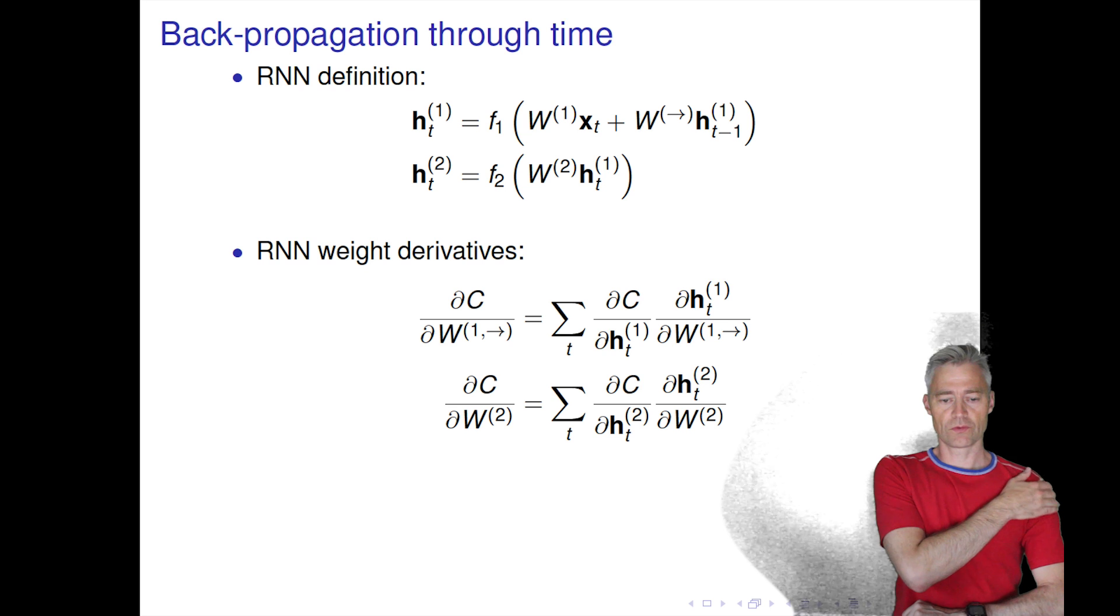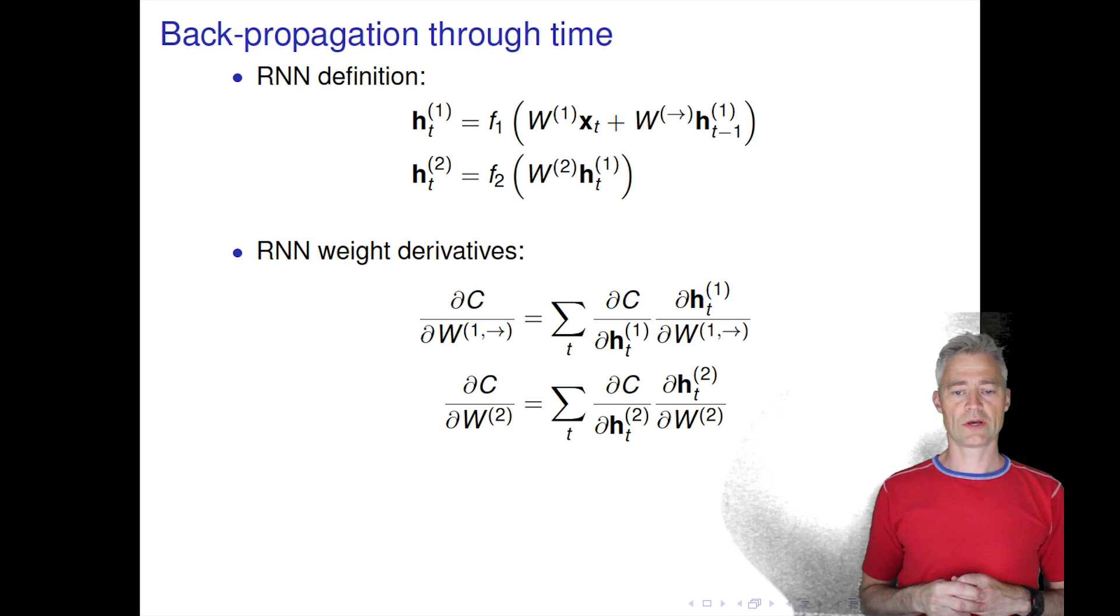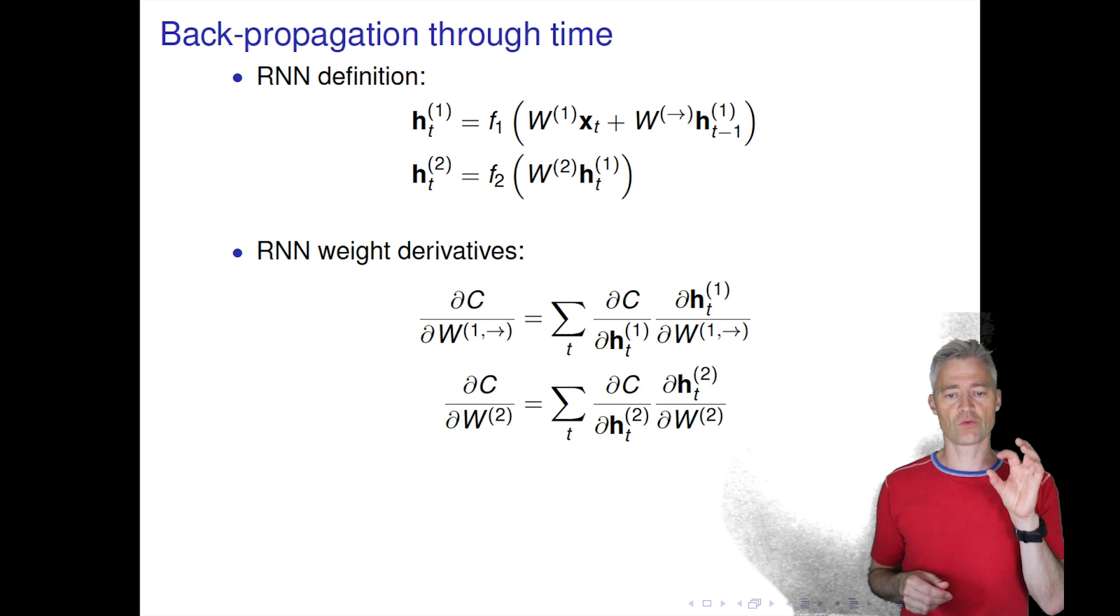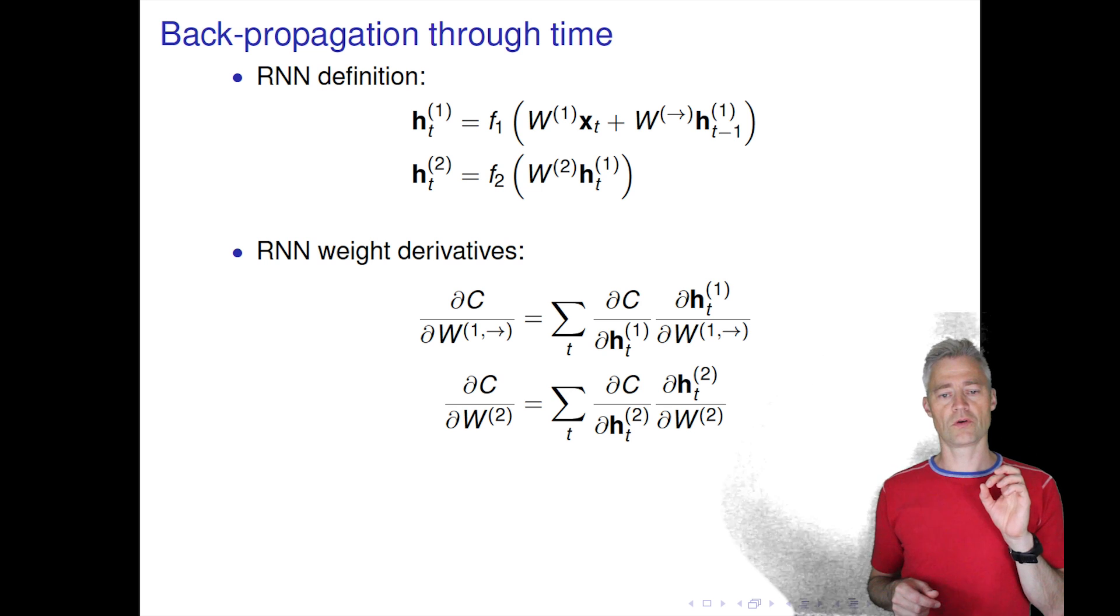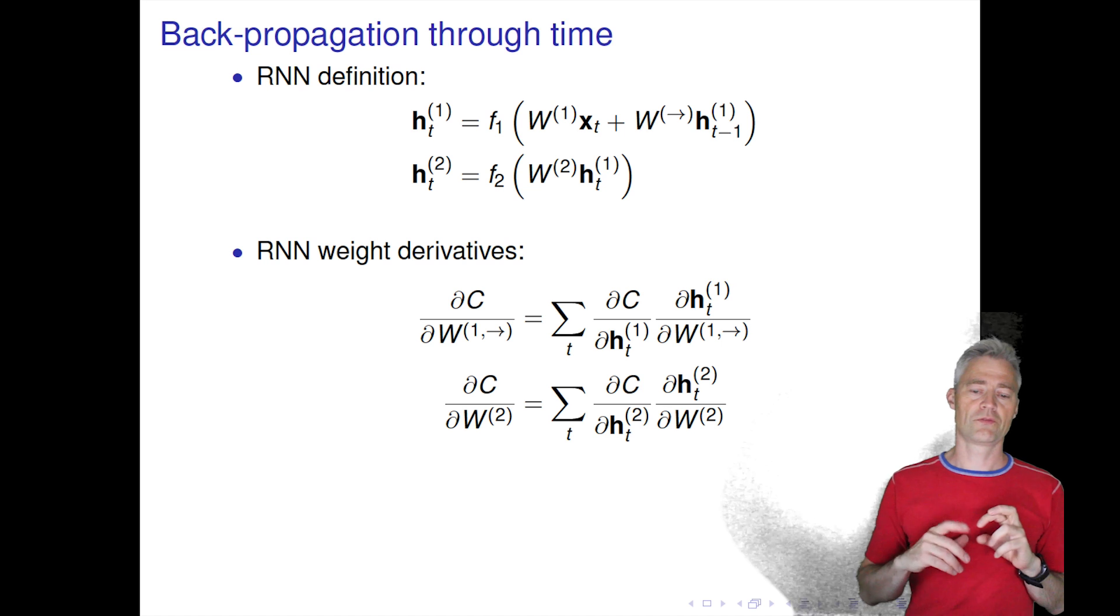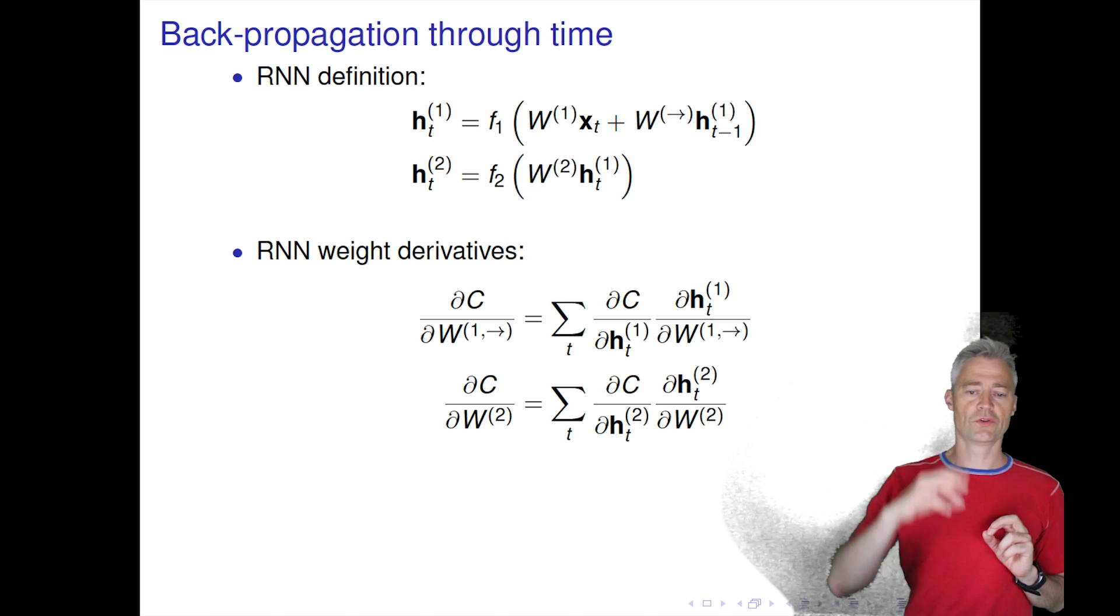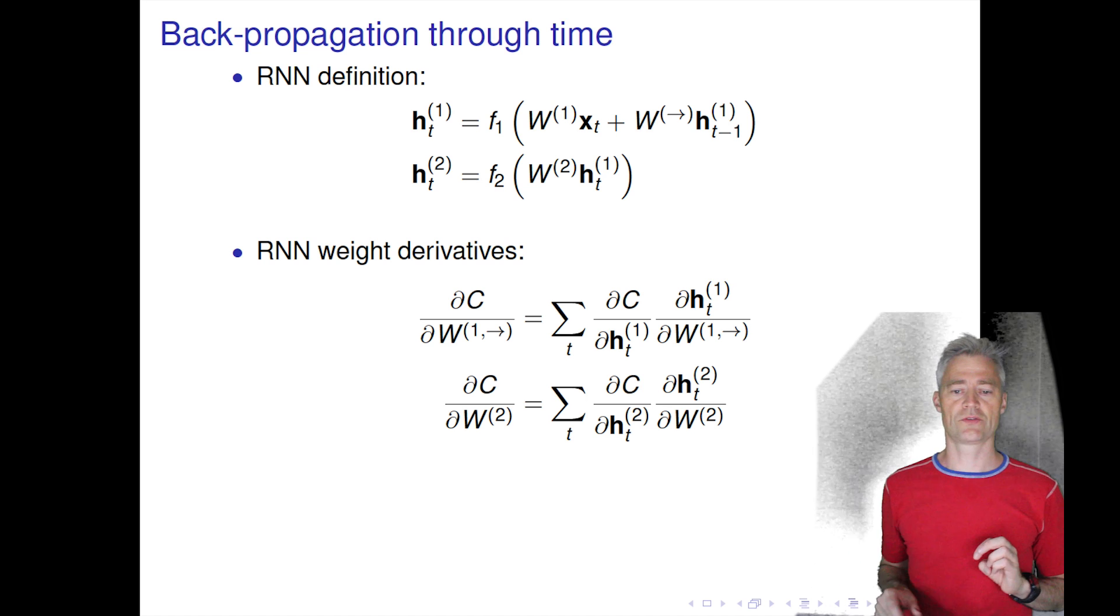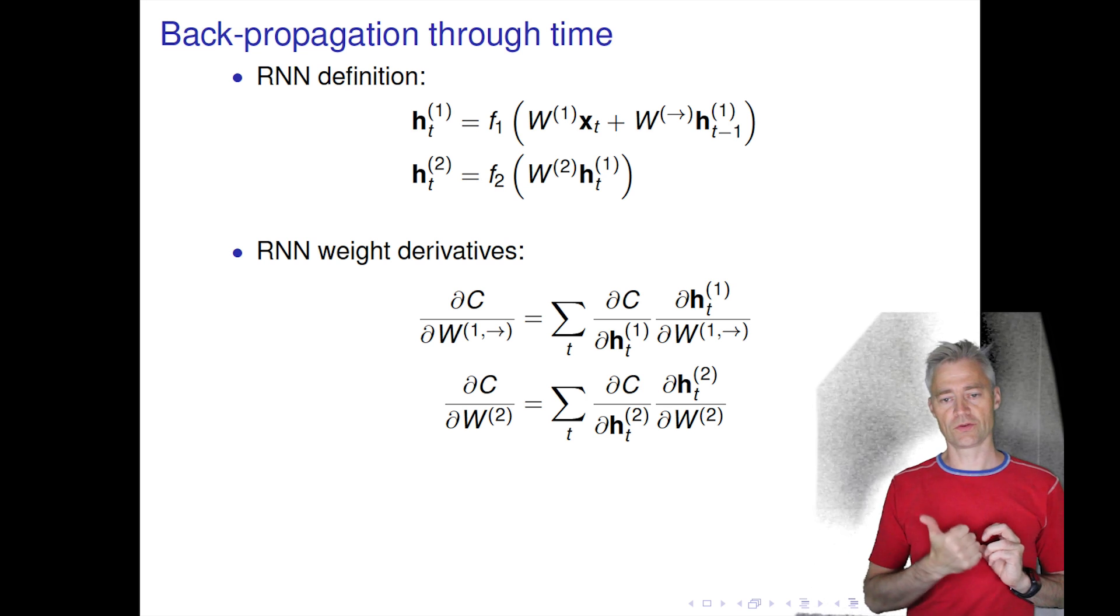I have these three types of weights: the regular feed-forward net weights from the input to the first hidden layer, the regular feed-forward weights to the second layer called W^(1) and W^(2), and then the weights for the propagation across time.